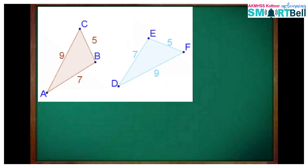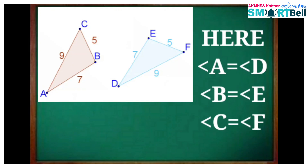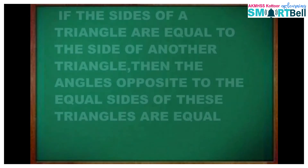The medium sized angles are angle C and angle F, so angle C equals angle F. It is opposite to the medium sized side. The things we have just learnt can be summarized as follows: if the sides of a triangle are equal to the sides of another triangle, then the angles opposite to the equal sides of these triangles are equal.